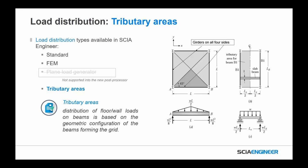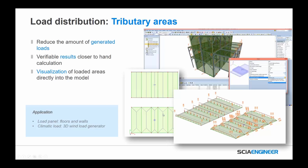One other improvement was for load distribution — the ability to utilize tributary areas. No longer just using the standard or FEM approach, but also using tributary areas: the distribution of loads on beams based on the geometric configuration of beams forming grid spacing. Whether triangular or otherwise, these are all calculated. We can see tributary areas and how they're calculated on individual floors, whether one-way or two-way. It's easier to verify and visualize what's happening and how loads are being transferred. This also reduces the amount of generated loads — we get more individual line loads rather than mesh-based loads.